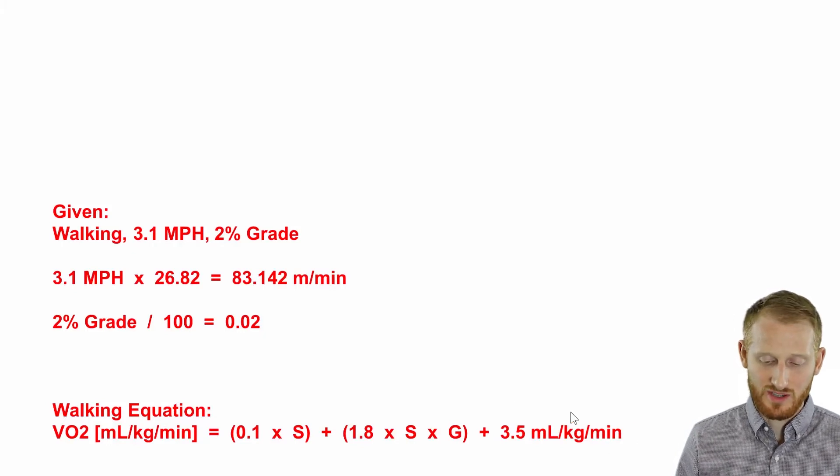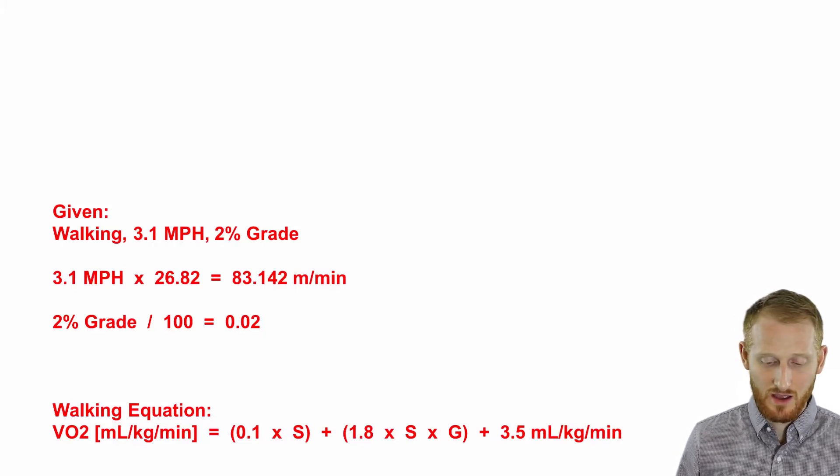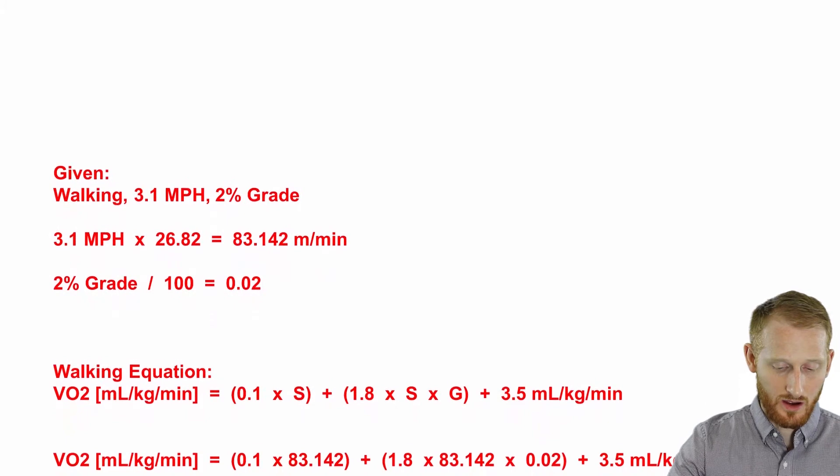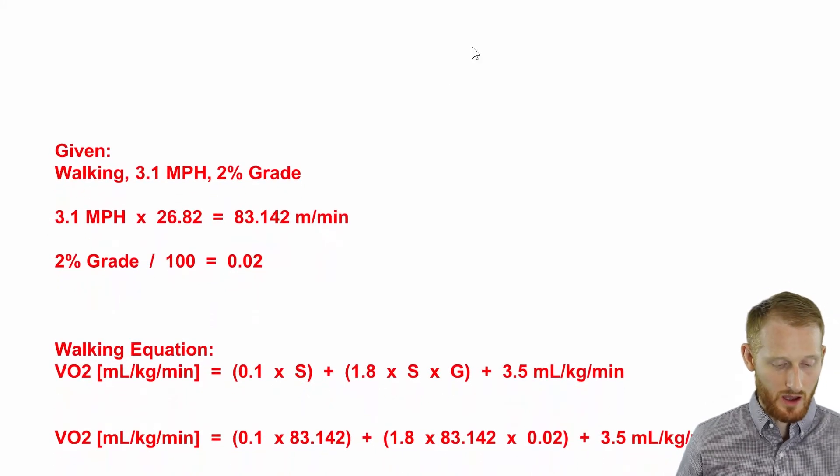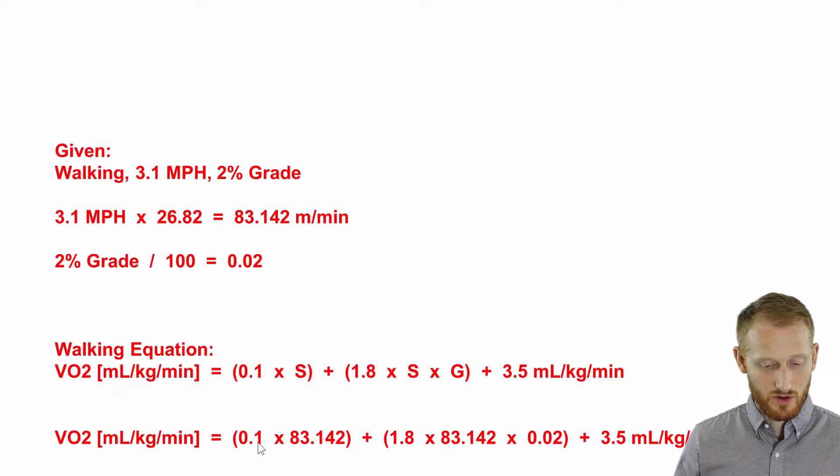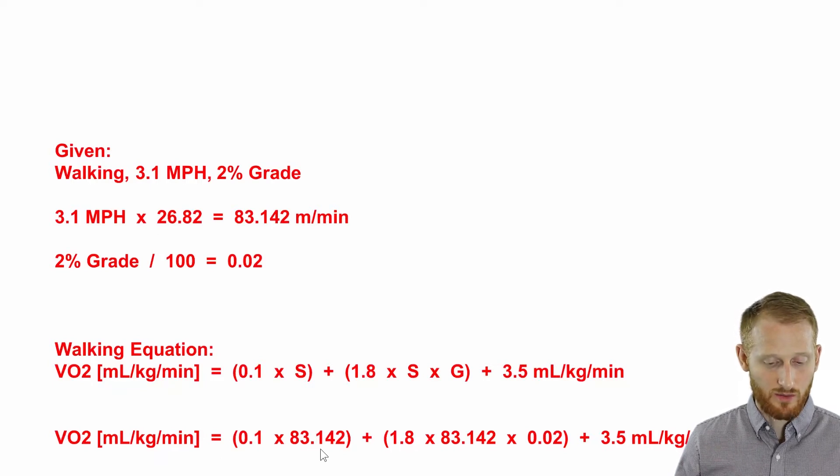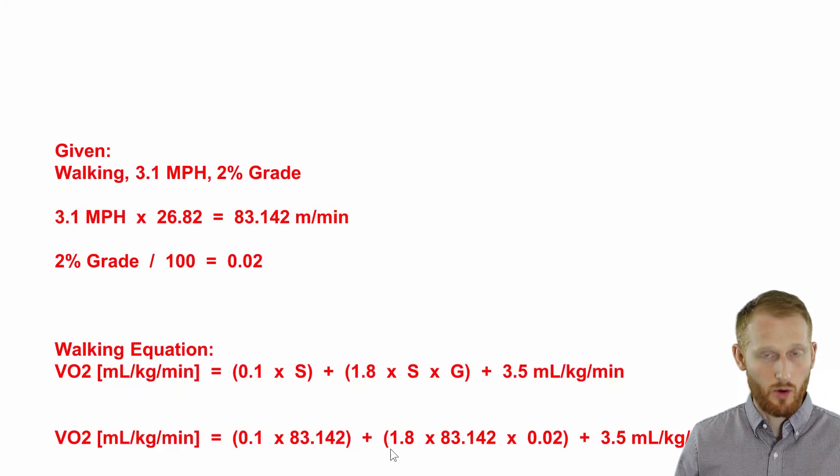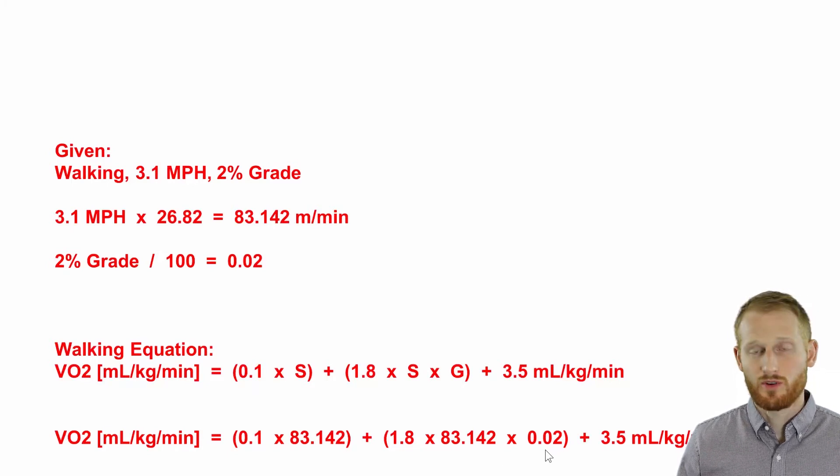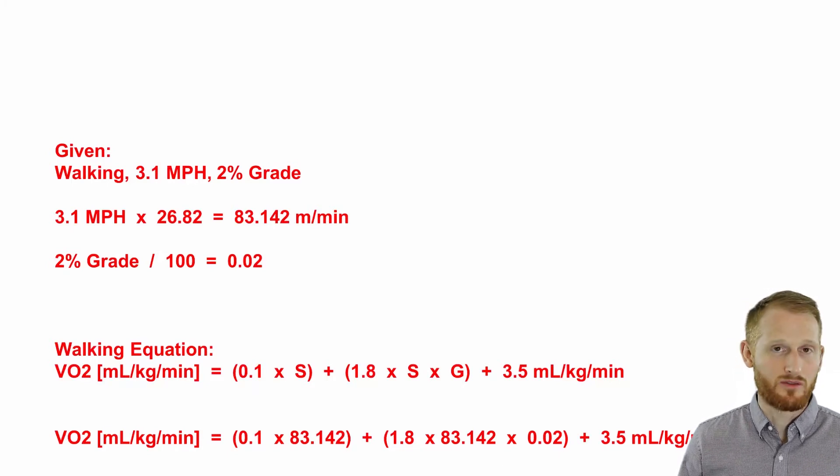Let's go ahead and plug in our values for the speed and the grade. We end up with VO2 equals 0.1 times 83.142 in parentheses, plus open parenthesis 1.8 times 83.142 times 0.02 close parenthesis, plus 3.5.